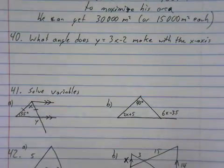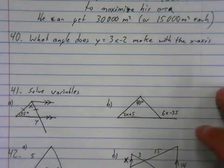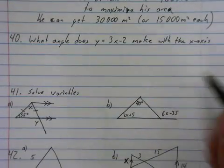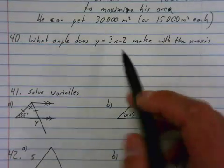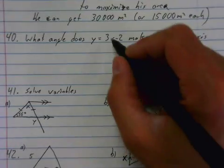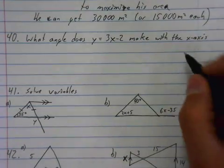Okay, so question 40 is another question that you don't have to be able to do, but I mean, you should be able to do it. What angle does y equals 3x minus 2 make with the x-axis?